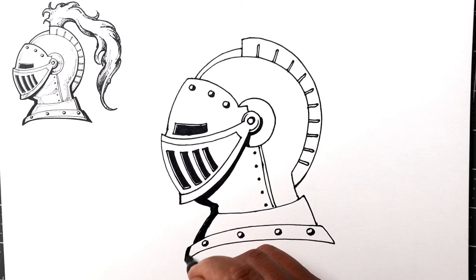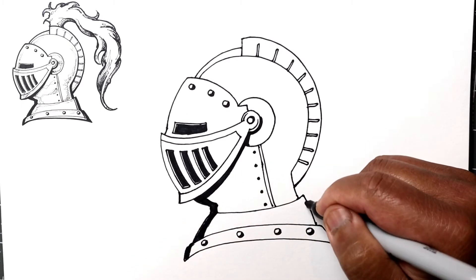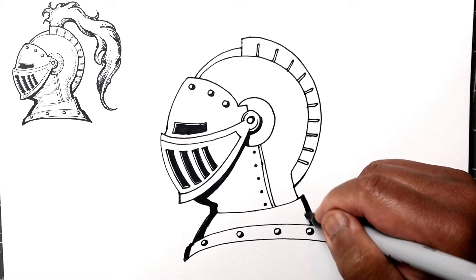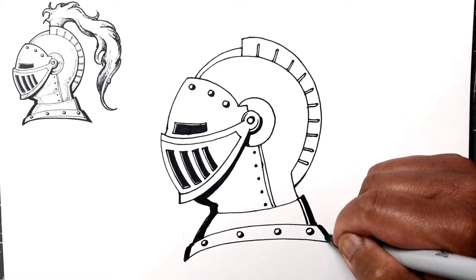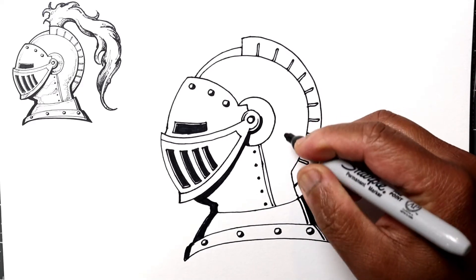This will help to kind of show that it's rounded, and I'll do the same on this side. What I'll do is I'll add a second line, and this kind of helps to make it look like it's a little bit shiny.